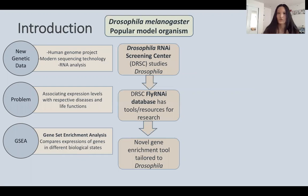Drosophila melanogaster is a very popular model organism for scientists studying the human genome. This is because Drosophila reproduces in very large numbers with a very short life cycle, and it's very inexpensive, which allows for a great multiplicity within studies. Drosophila also reproduces with external embryos, allowing for very easy and convenient gene editing.